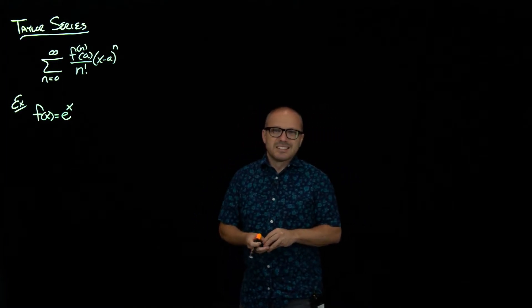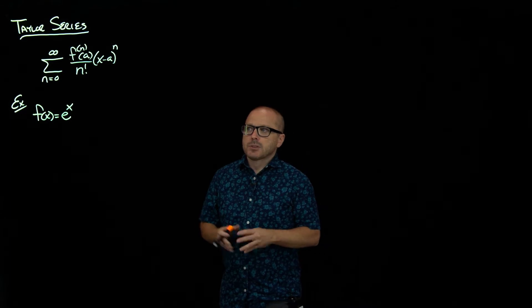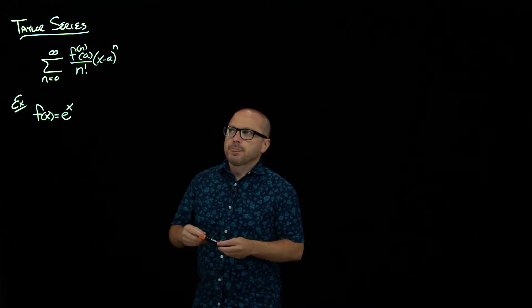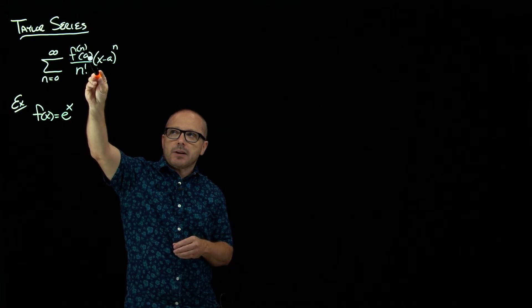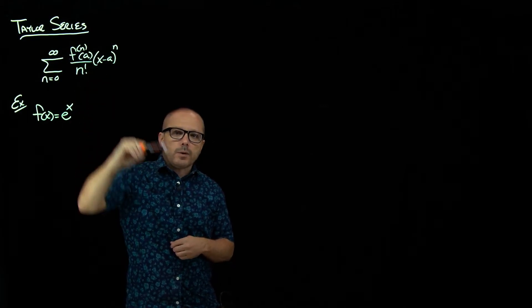First one I want to look at here is e to the x. So let's think about what we need to do. In this formula, there's really two things that need to be figured out. First of all, what are we going to have for A?